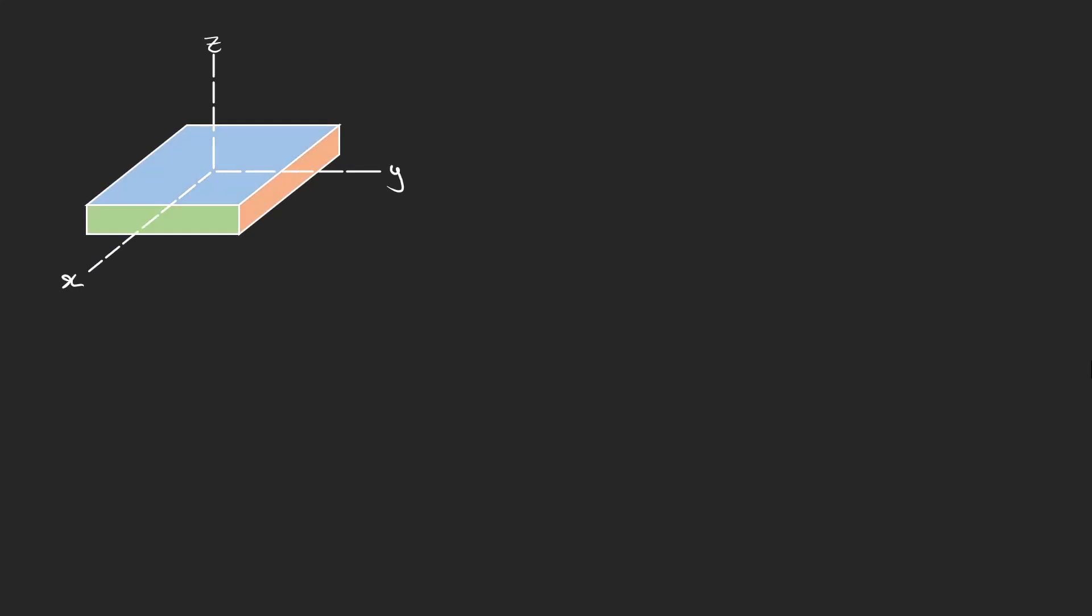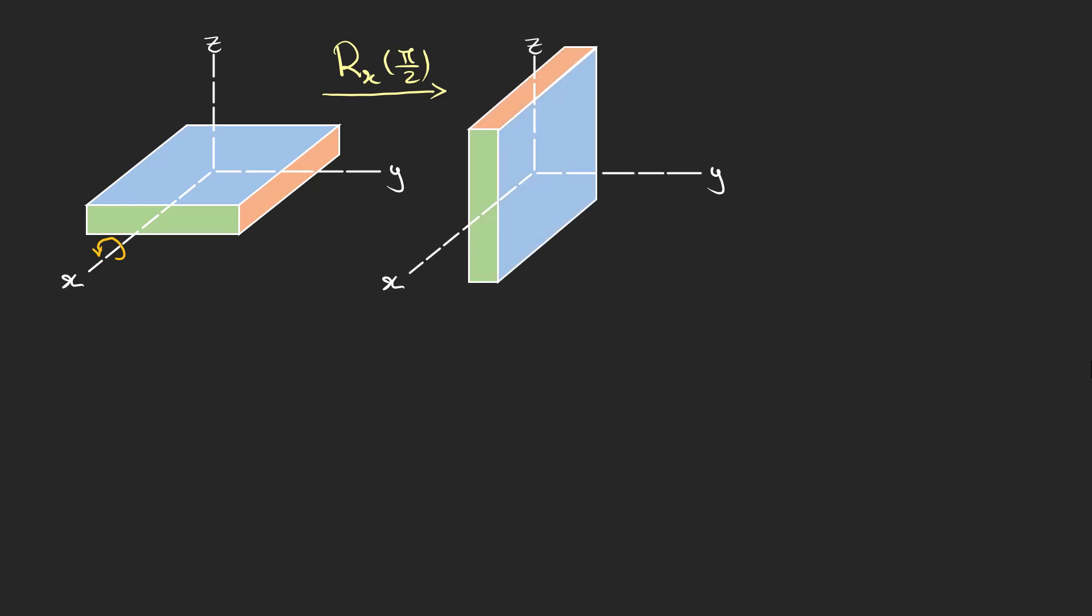Consider this box in a three-dimensional space. If we rotated 90 degrees counterclockwise about the x-axis, we get this orientation.